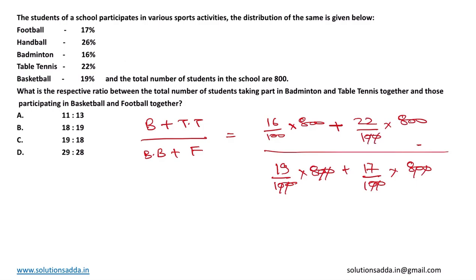On cancelling 800 with 100, the equation comes down to 16 times 8, which is 128 for badminton, plus 22 times 8, which is 176, divided by 19 times 8, which is 152 for basketball, plus 17 times 8, which is 136 for football.